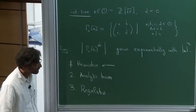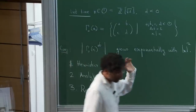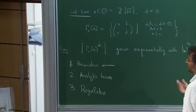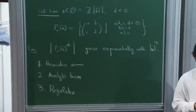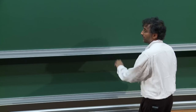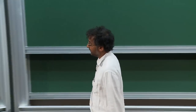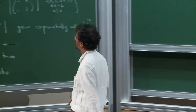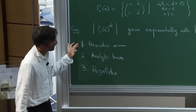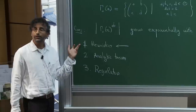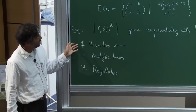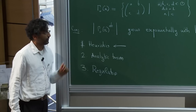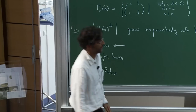I described a heuristic which at least very crudely explains why this should be large. I'm going to spend more time talking about that — I'll finish discussing that heuristic from yesterday, and then we'll talk about another heuristic. Probably by the end of the day, we'll start on analytic torsion.